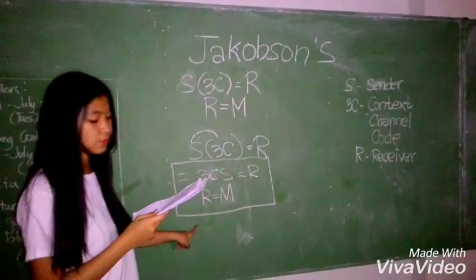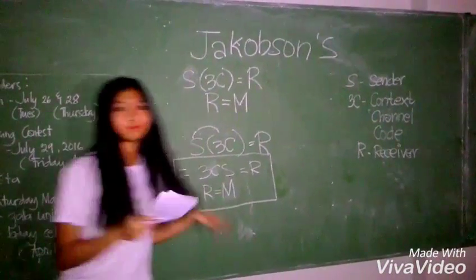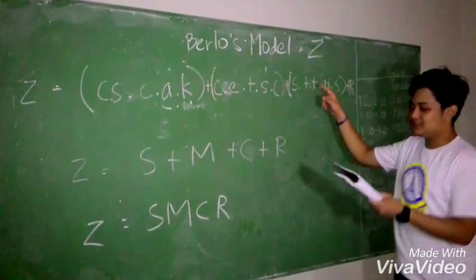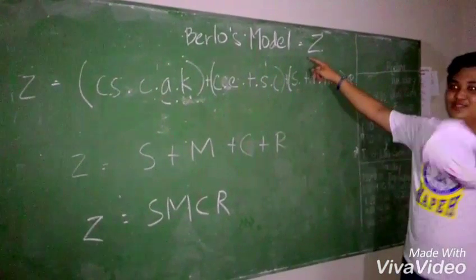And if the receiver received the message, then the message is successfully sent by the sender. Berlo's model is equal to Z.